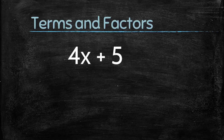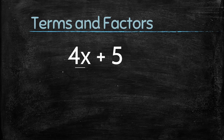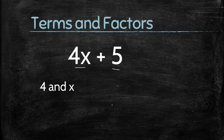First, let's understand terms and factors. Terms are added to form expressions. Consider the expression 4x plus 5 — this expression is made up of two terms: 4x and 5. Terms themselves can be formed as the product of factors. The first term 4x has two factors: 4 and x, while the second term 5 is made up of just one factor, that is 5.